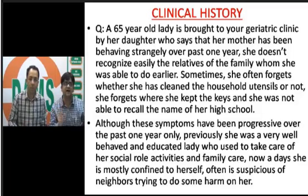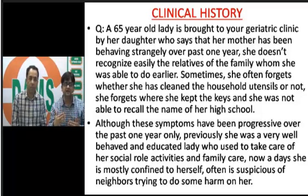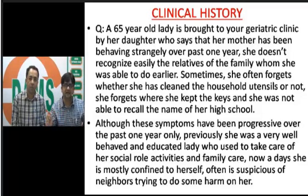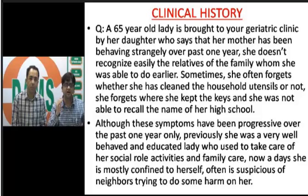Sometimes she forgets whether she has cleaned household utensils — that is recent memory loss, within the last 24 hours. She forgets where she has kept the keys. She was not able to recall the name of her high school, which is remote memory loss. So we have amnesia of both recent and remote memory, along with agnosia.